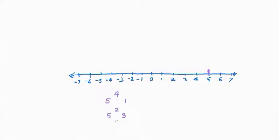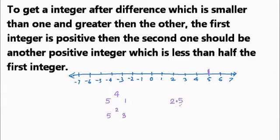The rule is: the second integer you select should always be less than half of the first integer. If I select 5, half of 5 is 2.5, so the second integer must be less than 2.5 — the closest integer less than 2.5 is 2. So maximum I can select is 5 and 2; I can't select 3. Similarly, if the first integer is 7, half of 7 is 3.5, so the second integer can be at most 3.